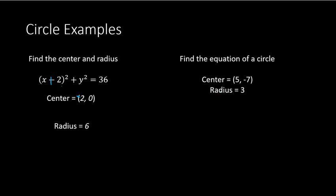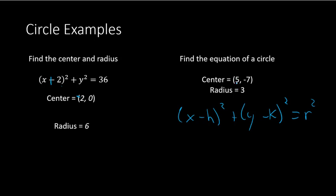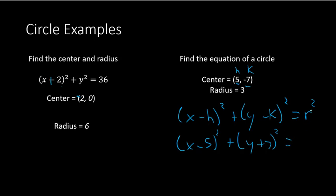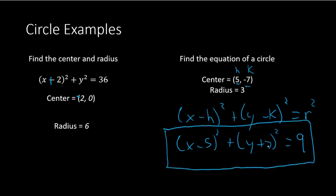If the equation had x plus 2, the center would be at negative 2 — always change the sign. Now working backwards: given center (5, -7) and radius 3, plug into standard form. We get (x minus 5) squared plus (y minus negative 7) squared equals 3 squared, which simplifies to (x minus 5) squared plus (y plus 7) squared equals 9.